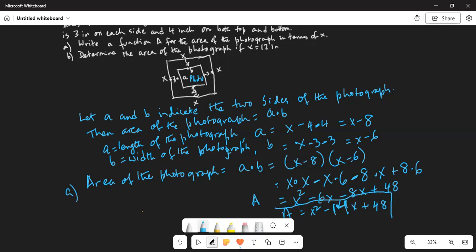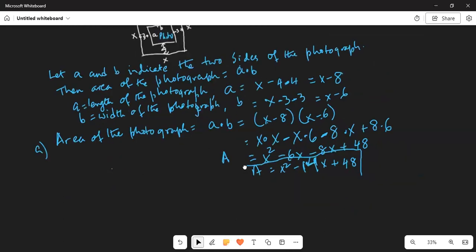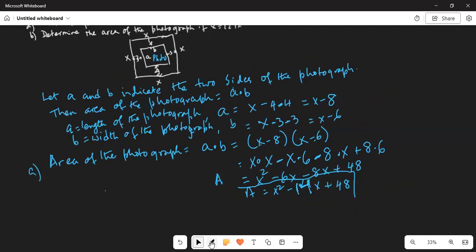So that's your final answer for part a: x squared minus 14x plus 48.